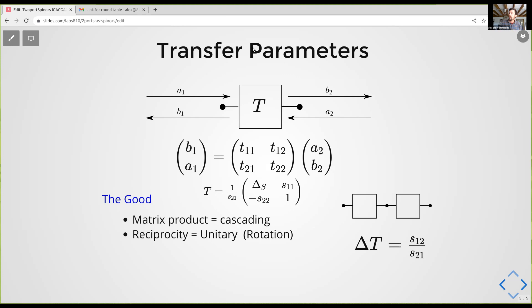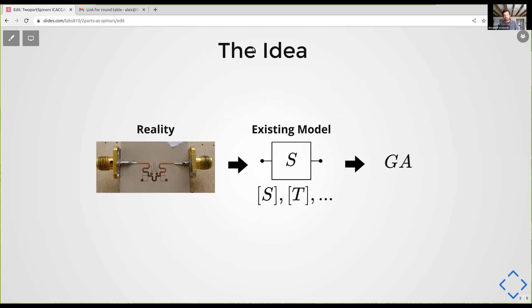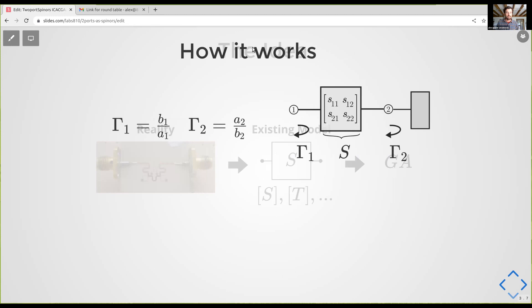So what am I doing? We have some reality which are these microwave two-port circuits. We have an existing linear algebra model, and we're trying to translate that into geometric algebra so we can gain insight and solve problems differently. If we have some two-port network S terminated at port two with some load that generates reflection coefficient gamma two, we can express gamma one in terms of gamma two parameterized by elements of the scattering matrix - this is the reflectometry equation.